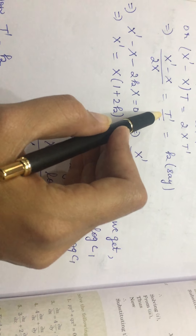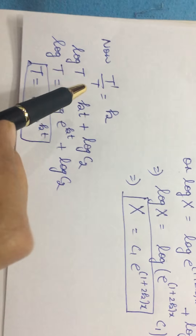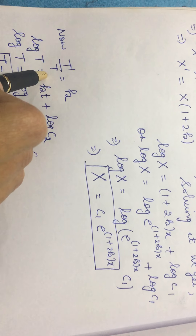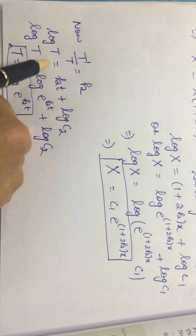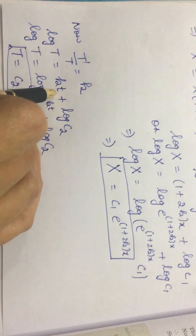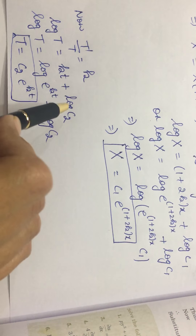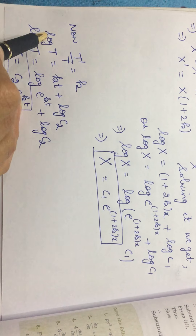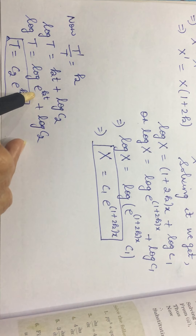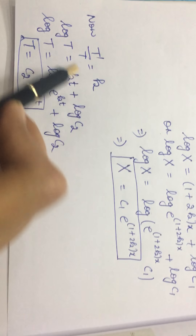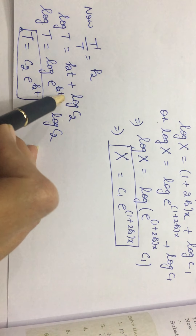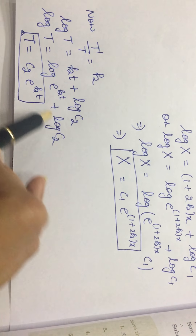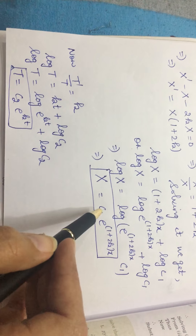Now solving T'/T = K: integrating both sides, since T' over T integrates to log T, we get log T = Kt + log C₂. Using the same log properties, this becomes T = C₂·e^(Kt). So now we have the values for both capital X and capital T.